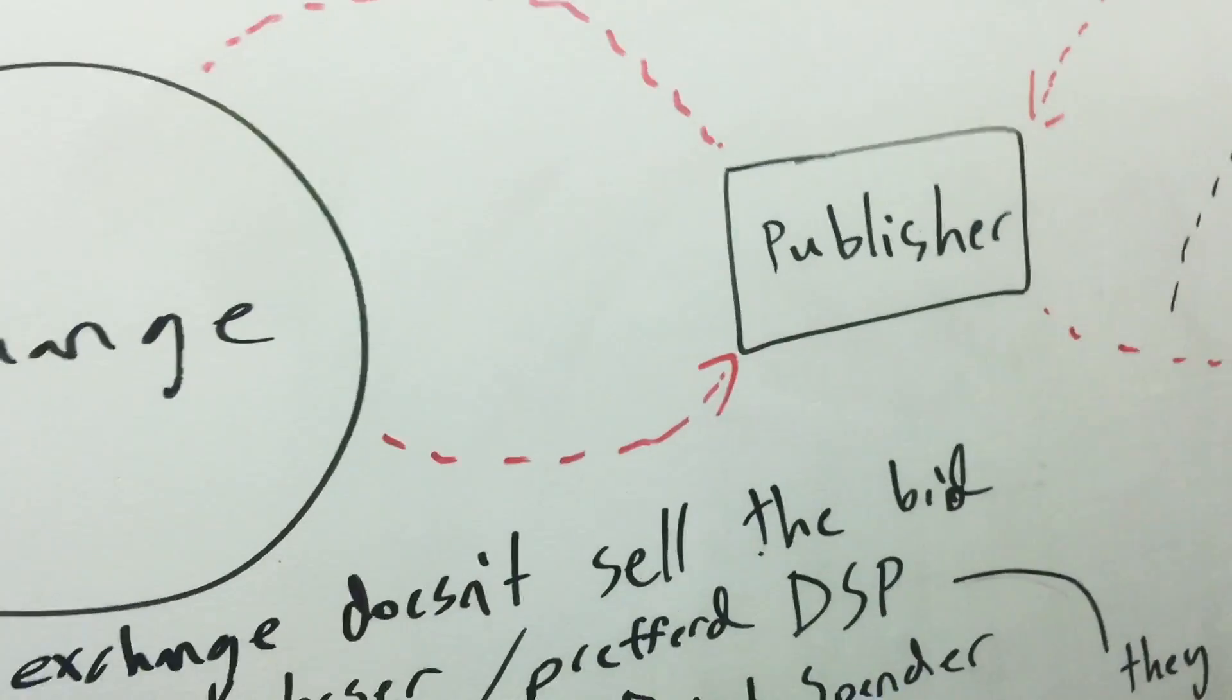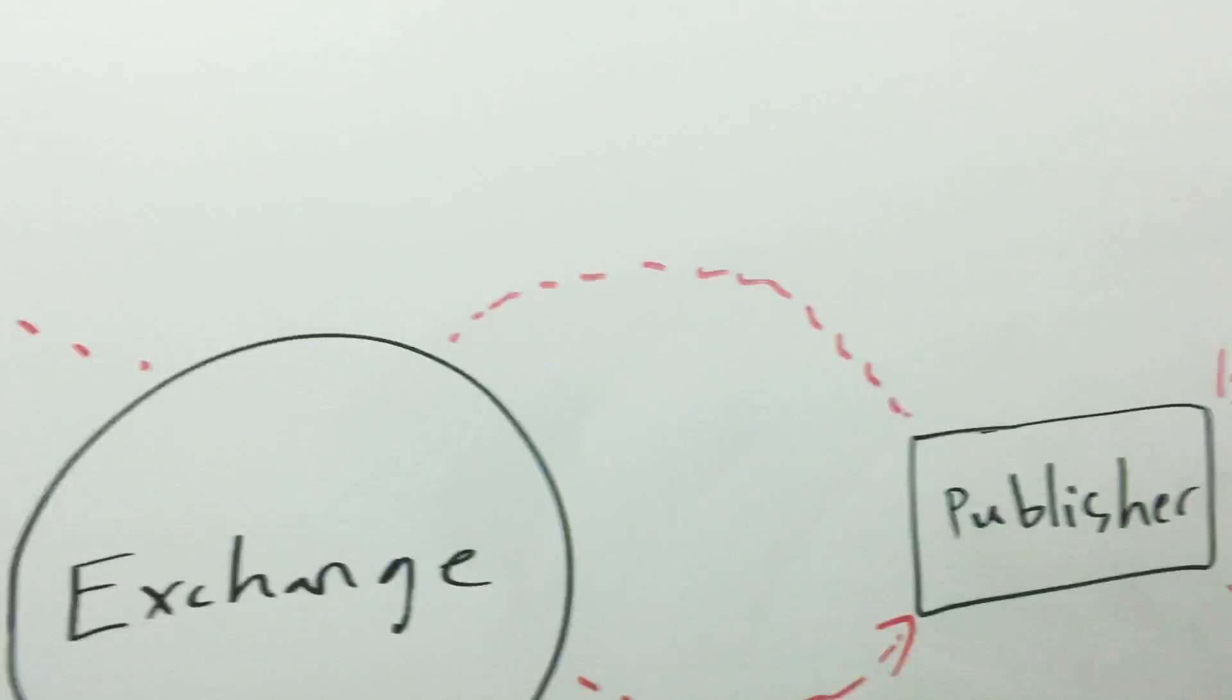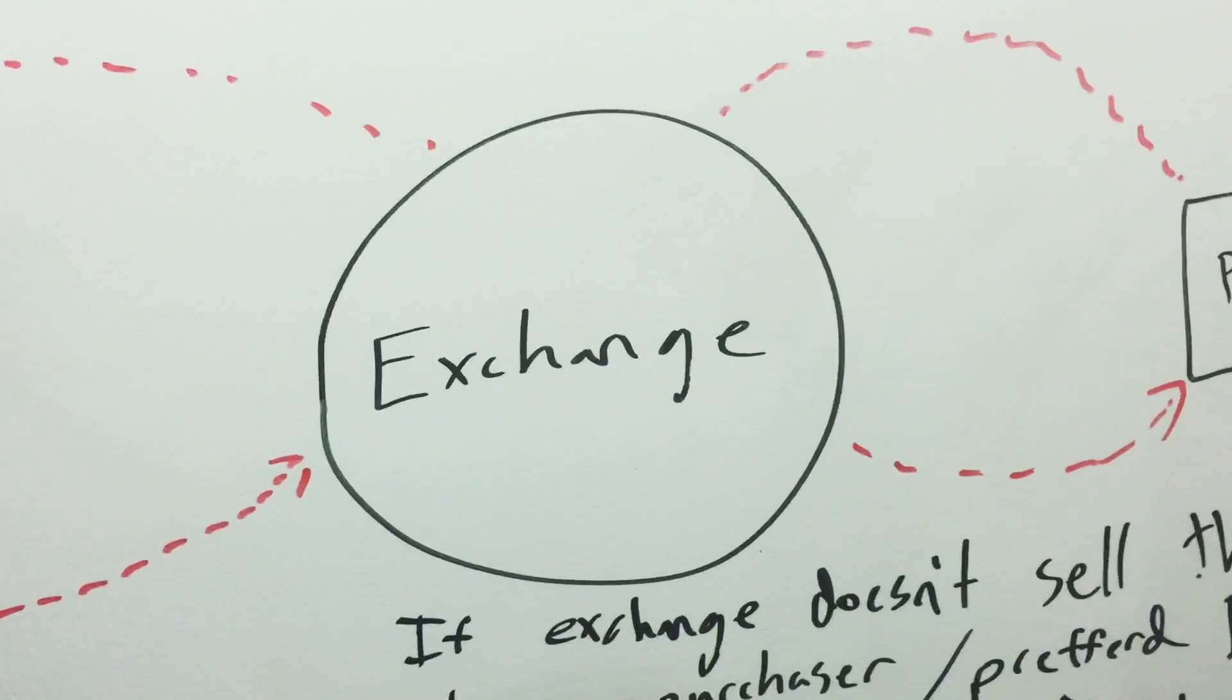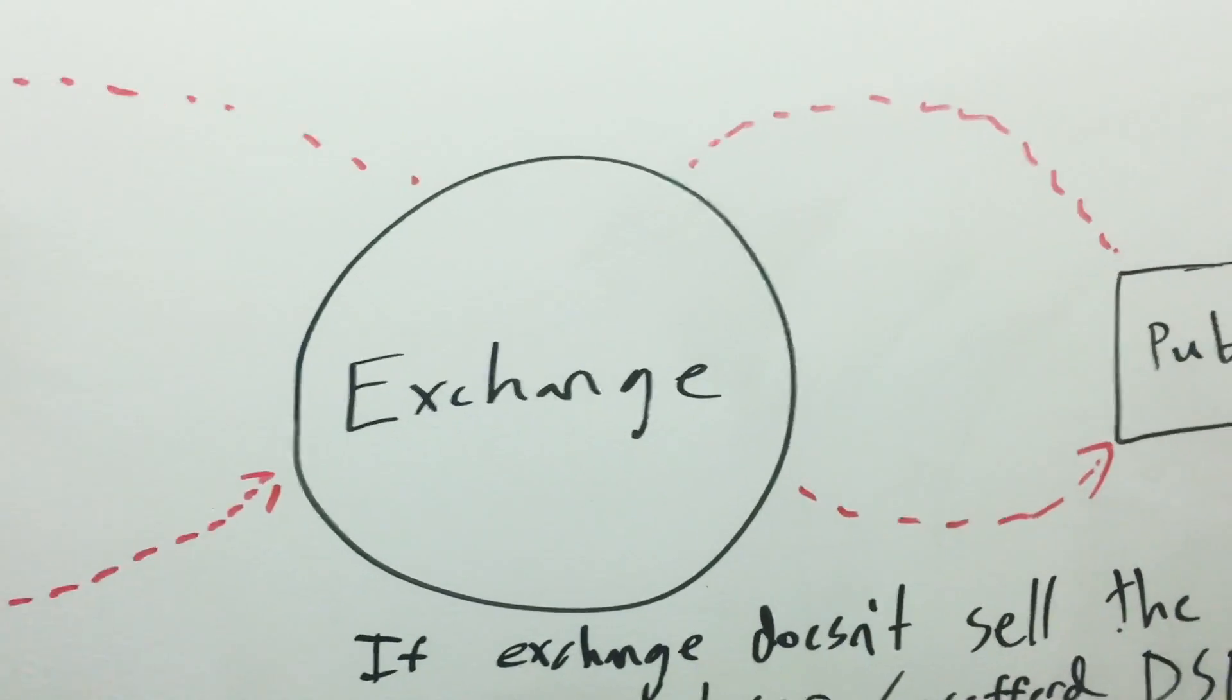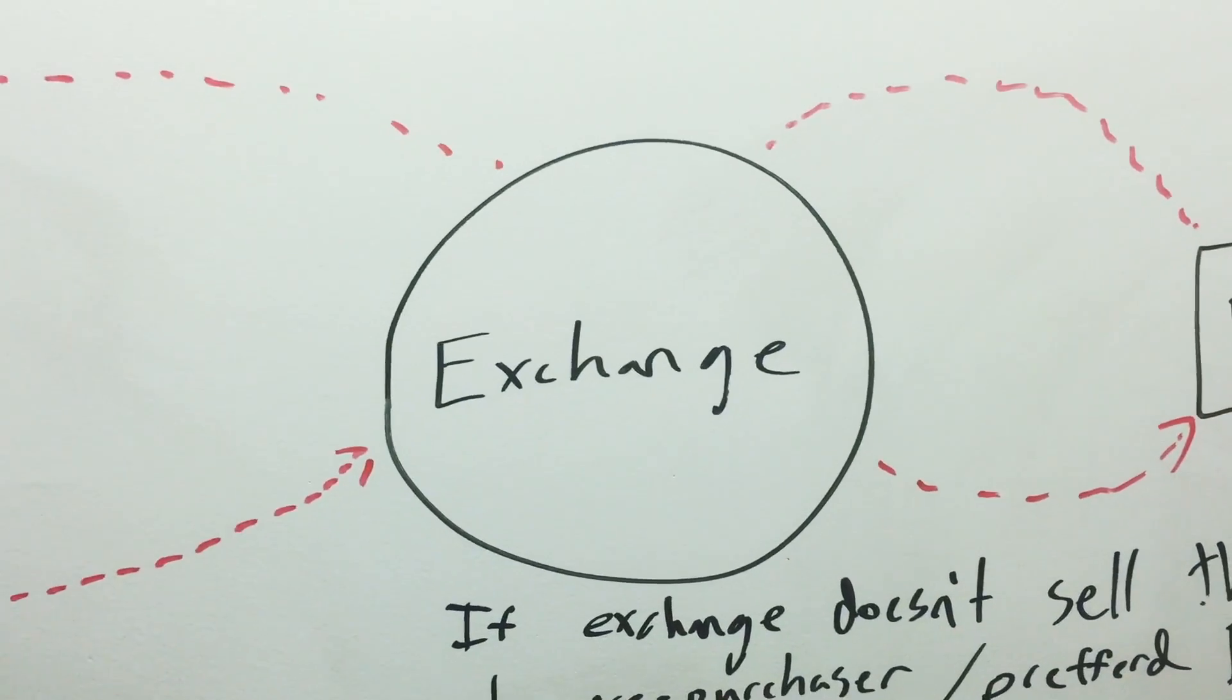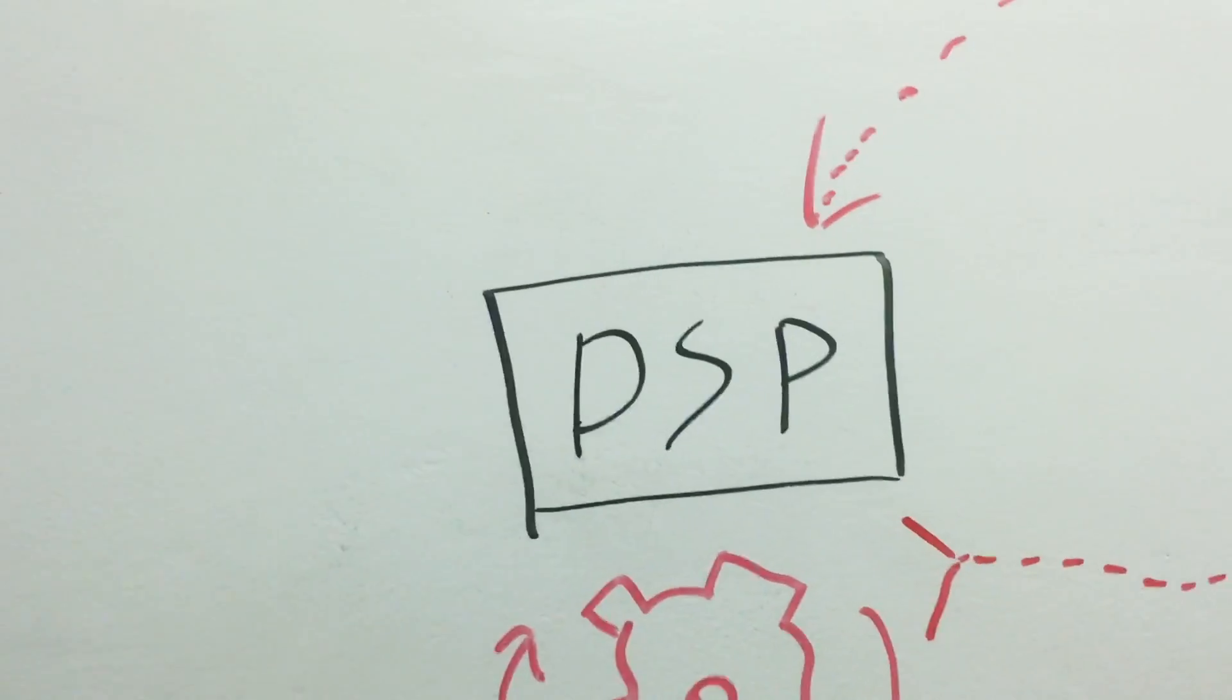I'm going to skip SSPs and stuff like that, but that gets sent to an exchange. An exchange then holds an auction and sends that ping to multiple DSPs. Imagine there's a couple DSPs here that it just sent that user ID to.